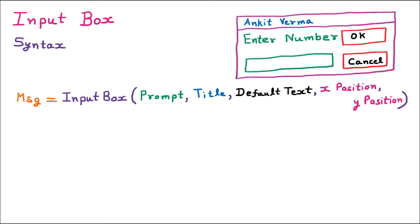The first parameter is the prompt. Whenever we display a message to the user, that is called the prompt. For example, if we show 'Enter Number' in the input box, that is the prompt. So the prompt is the first parameter and it is a string message which is displayed to the user.